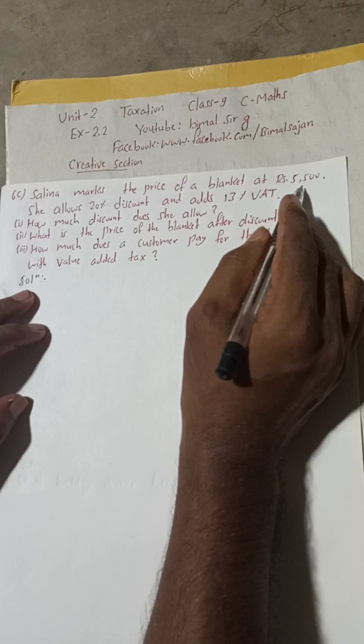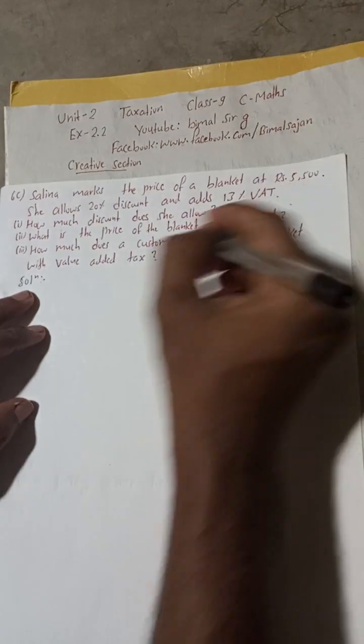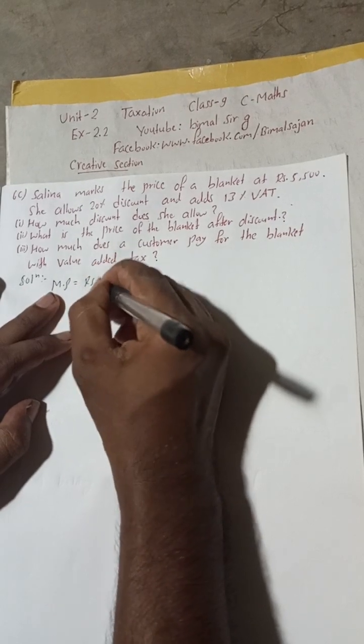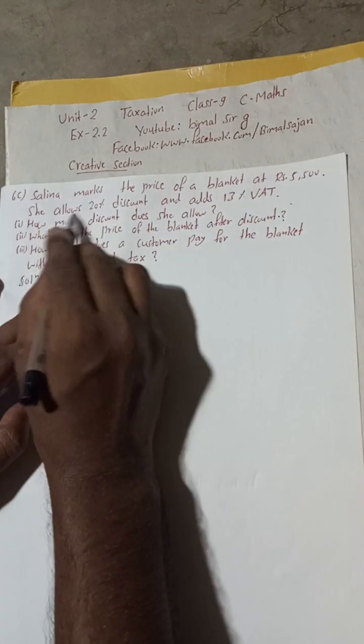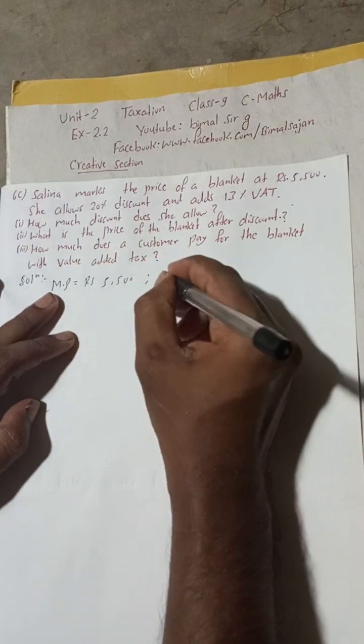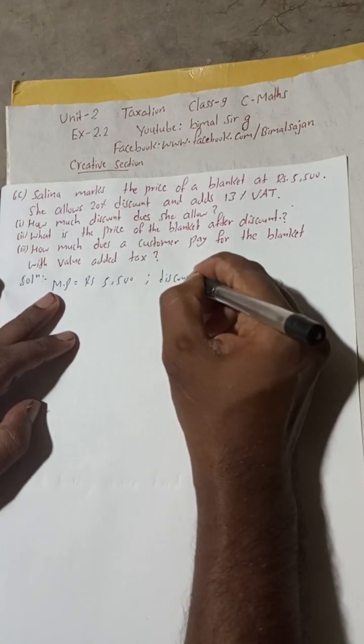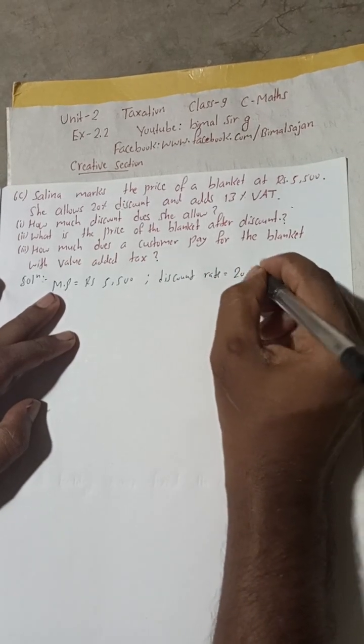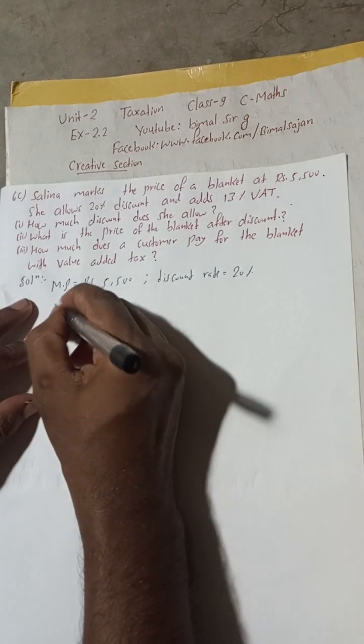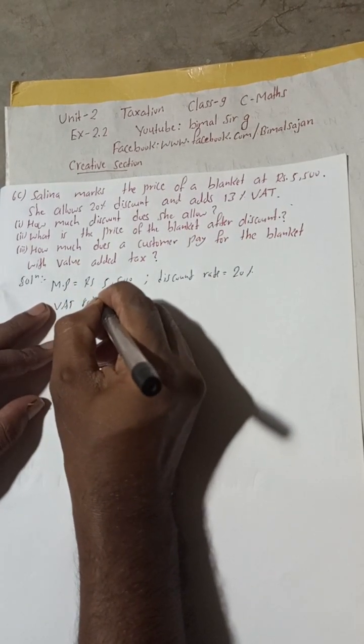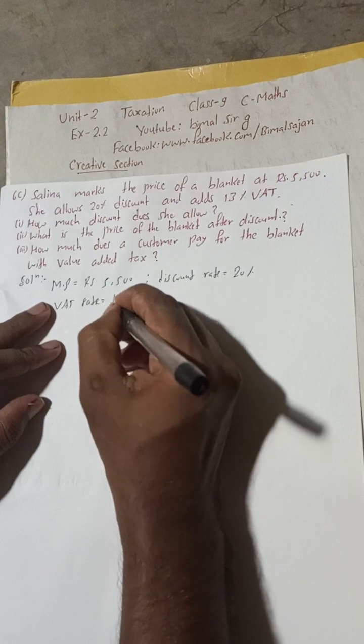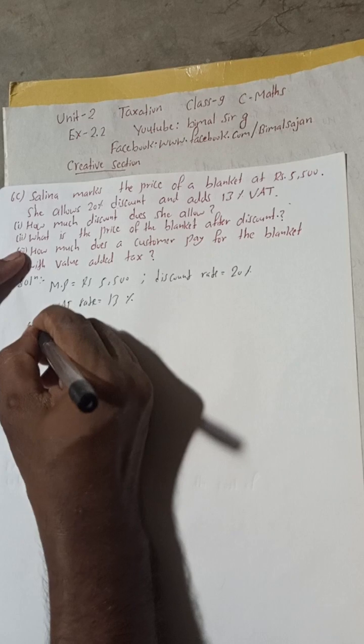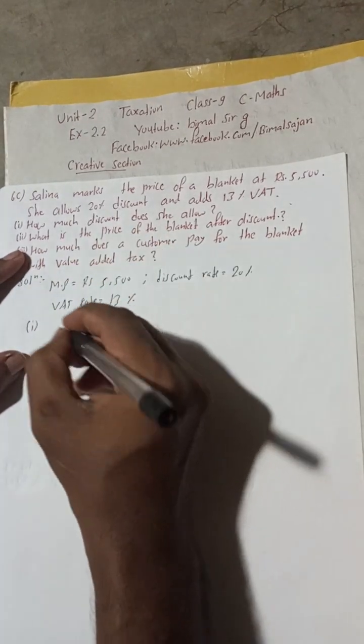So this is the marked price. MP, marked price is equal to Rs 5500. And the discount percent, so this is the discount rate. Discount rate is equal to 20%. And the VAT rate, rate is equal to 13%. Here is given.